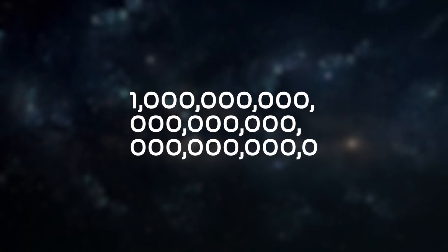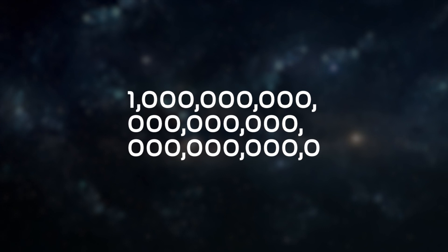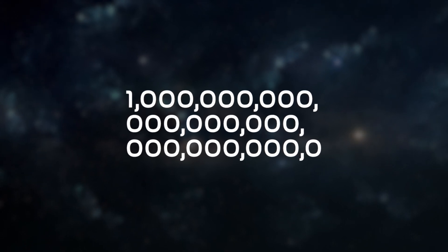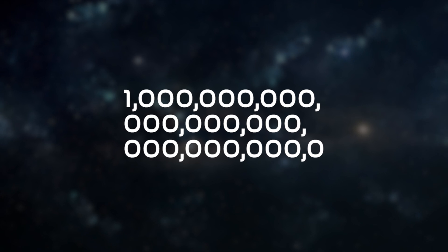For context, an octillion is 1 followed by 27 zeros, but when multiplied by a size of near infinite zero, it's not as big as you might think.